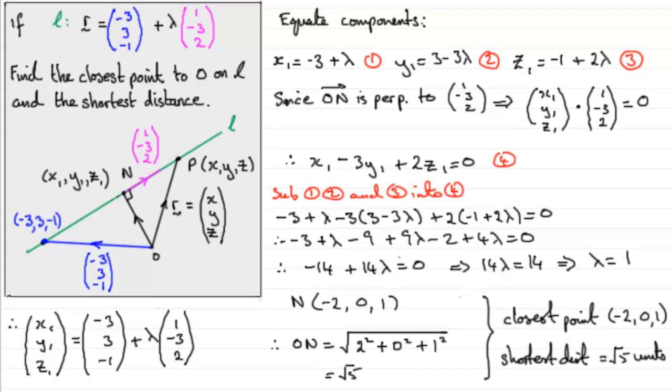It's also interesting to note that when I sketched this diagram, it looked like lambda was 2. We went to this point here, and lambda was 2 to get us to N. But it turns out that lambda equals 1, so this point (-3, 3, -1) on this line would have been about here then. But it doesn't matter how we draw our sketch, it's just to get the idea across.